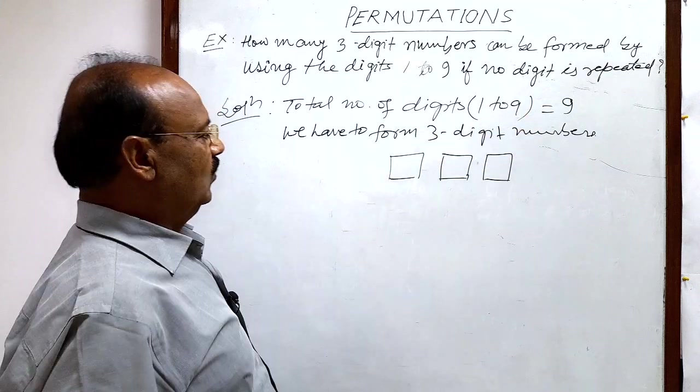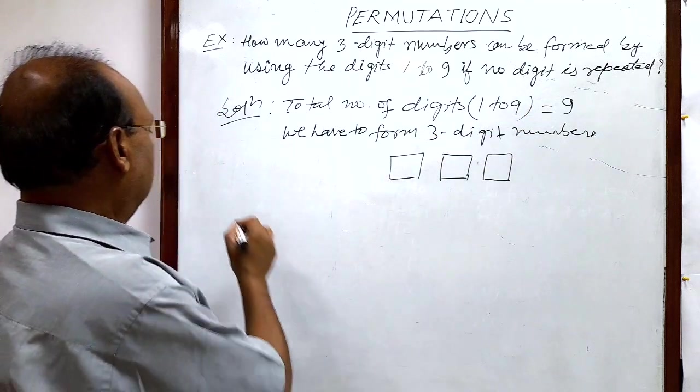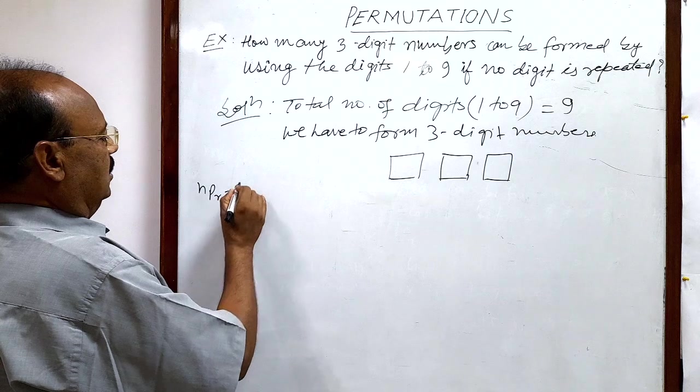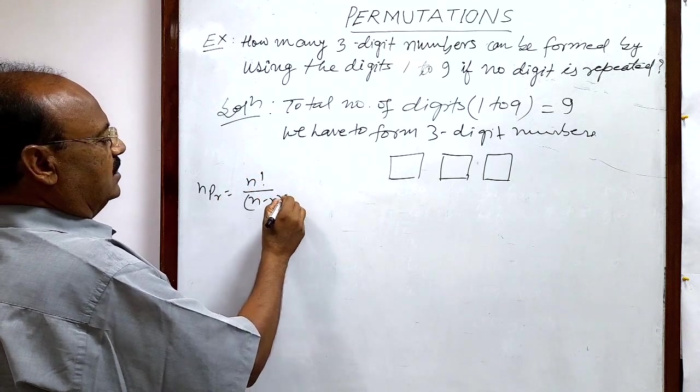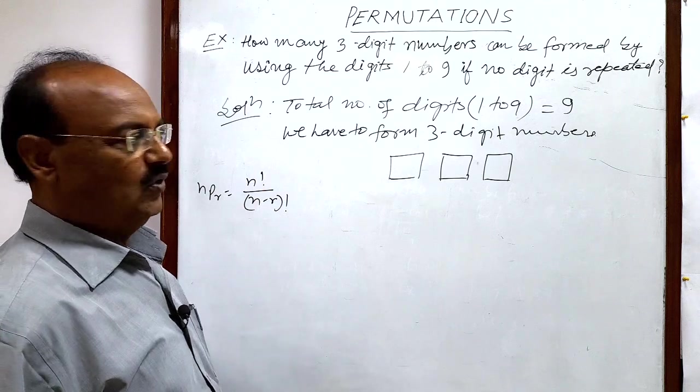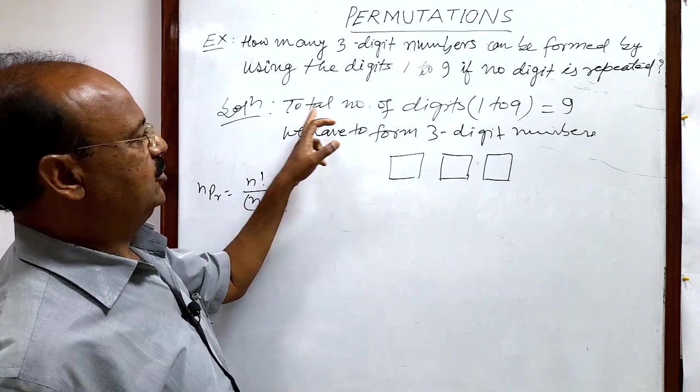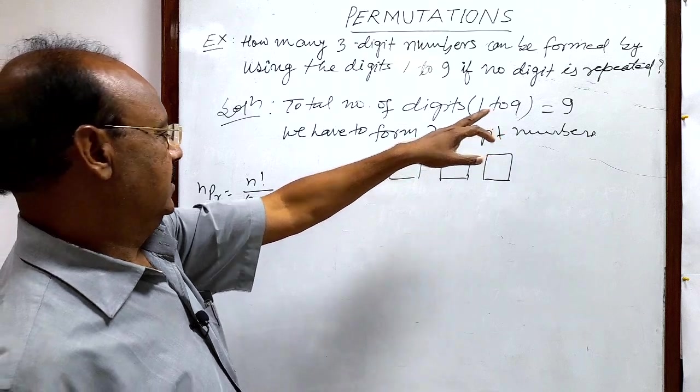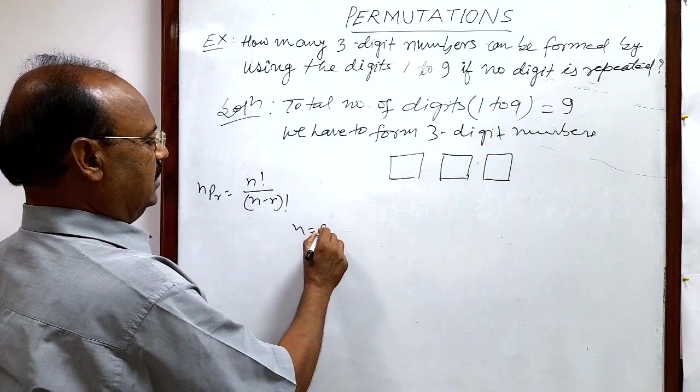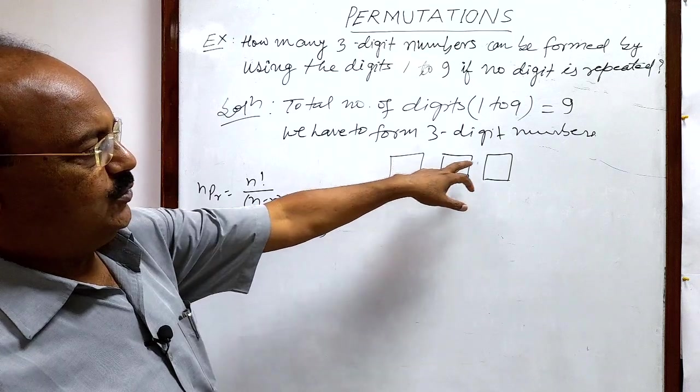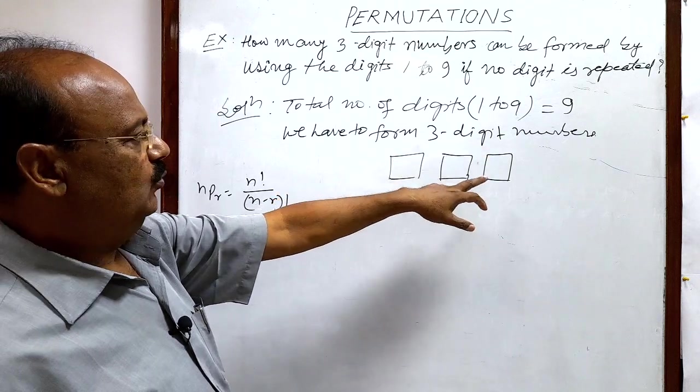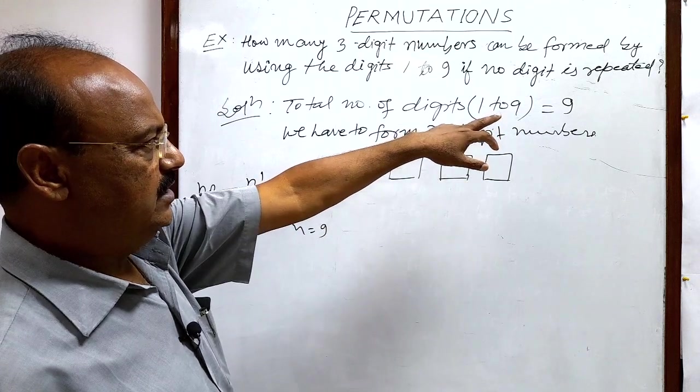Recall the formula: nPr equals n factorial divided by (n minus r) factorial. Here n equals the total number of digits, so n equals 9, and these three places have to be filled up with the help of these 9 digits.